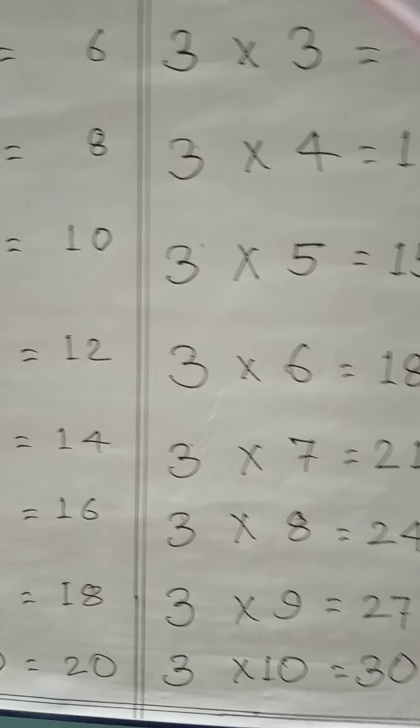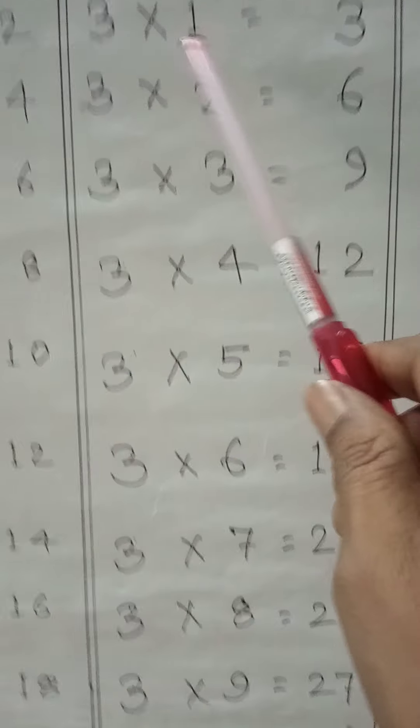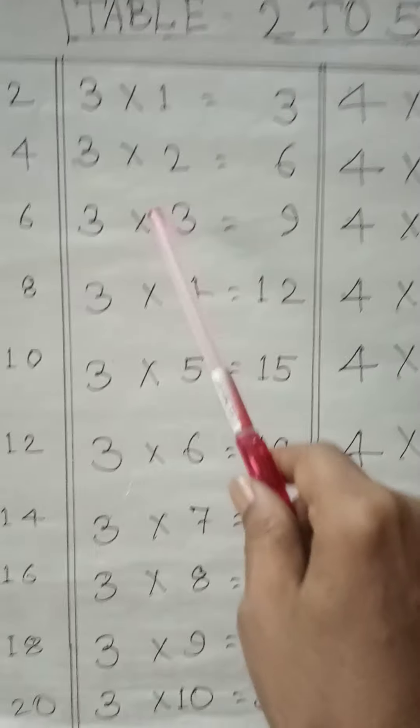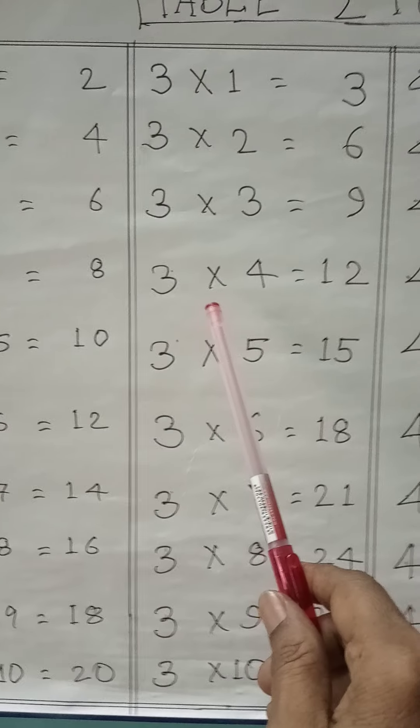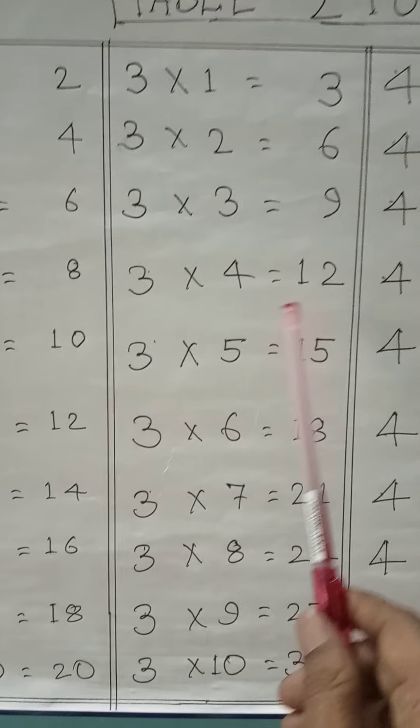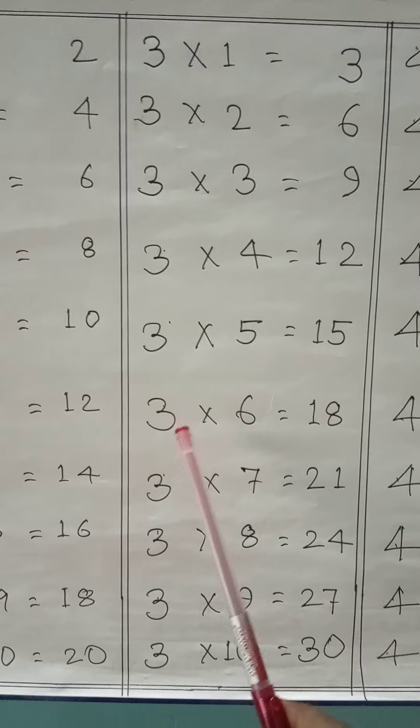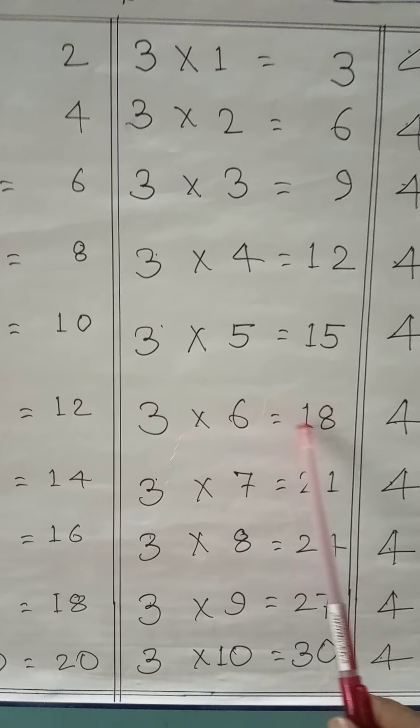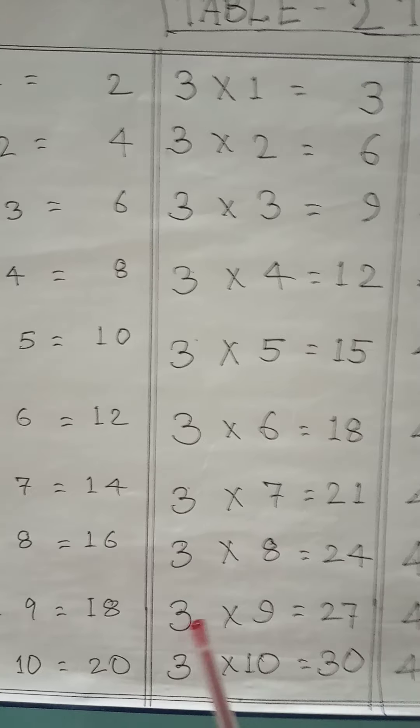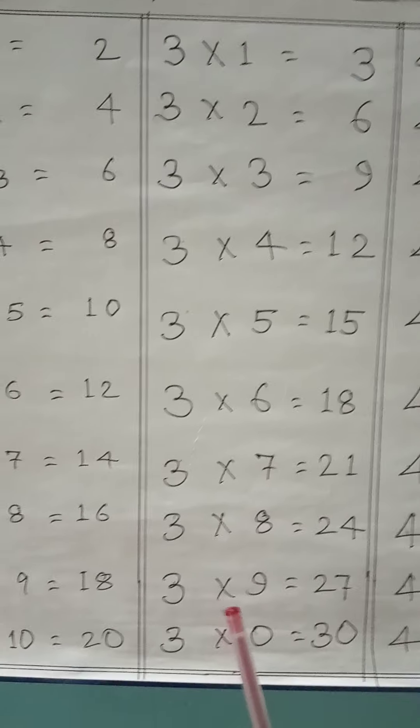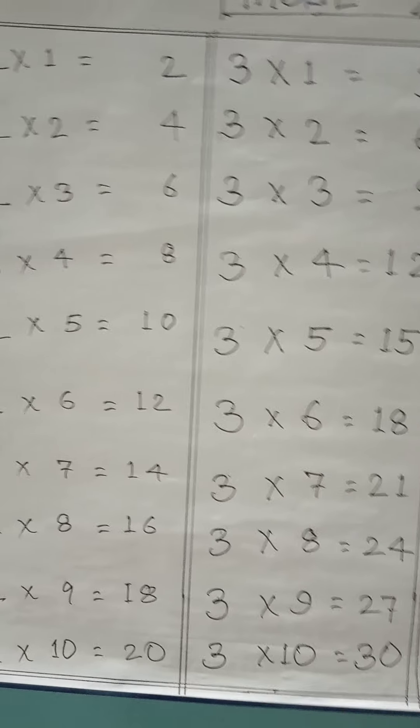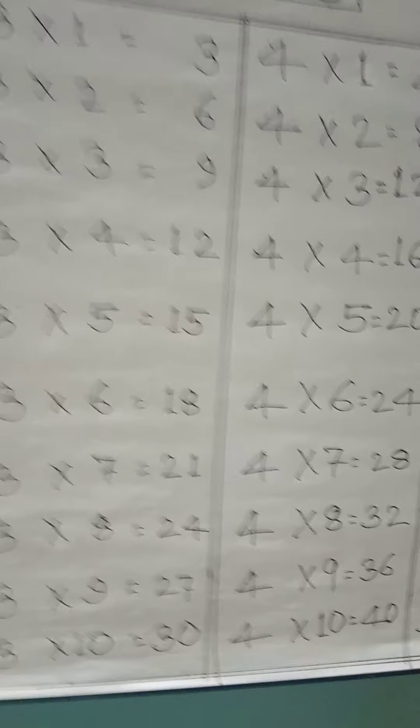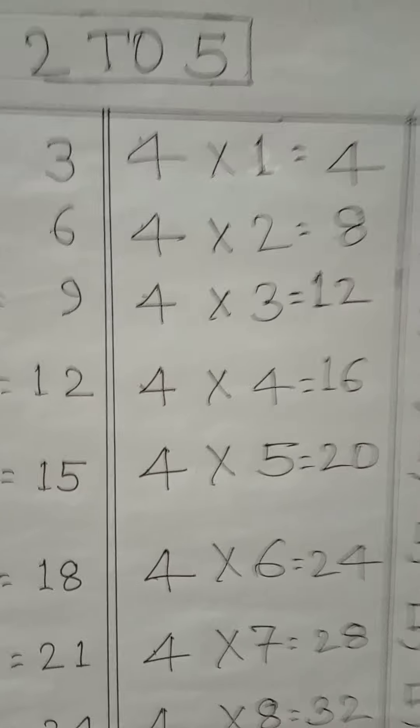Repeat again. 3 × 1 = 3, 3 × 2 = 6, 3 × 3 = 9, 3 × 4 = 12, 3 × 5 = 15, 3 × 6 = 18, 3 × 7 = 21, 3 × 8 = 24, 3 × 9 = 27, 3 × 10 = 30. Table of 4.